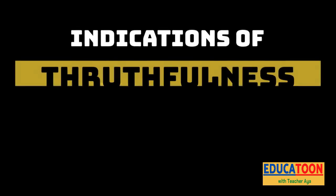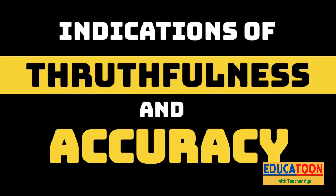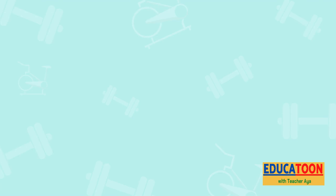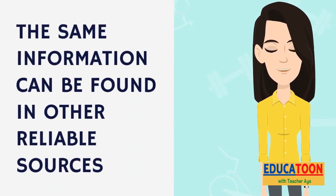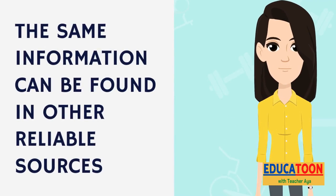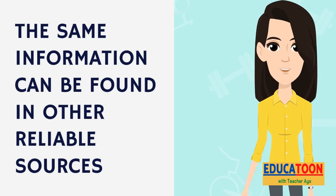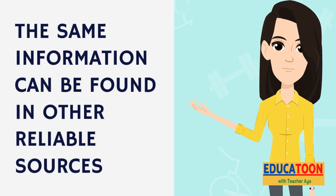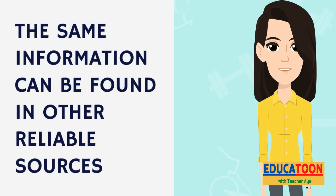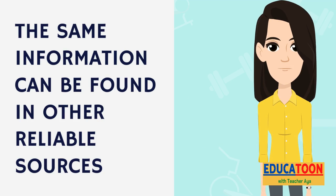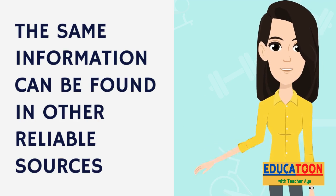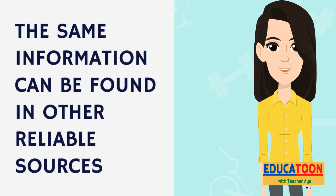Here are some of the indications that information viewed is accurate and true. Number 1: The same information can be found in other reliable sources. Take note of the main facts presented in the material viewed and compare it with multiple sources. If the facts are present in other sources, then you have truthful and accurate information.